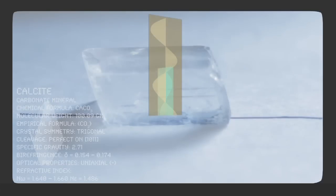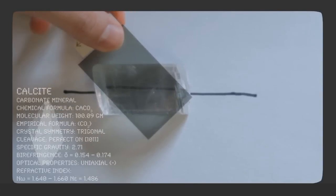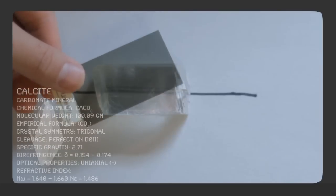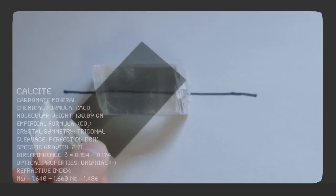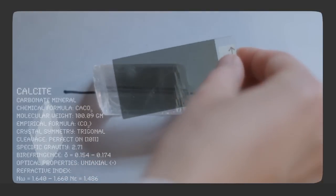Light entering this anisotropic calcite mineral is split into two rays with different velocities. Two rays vibrate at right angles to each other. When a polarized piece of film is placed on top, we can filter which rays pass through. If the polarized film is rotated 90 degrees, we see only one of the two rays at a time.